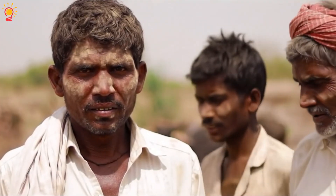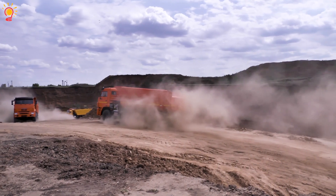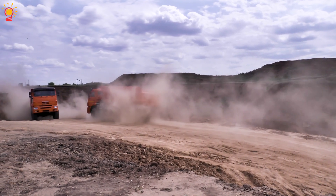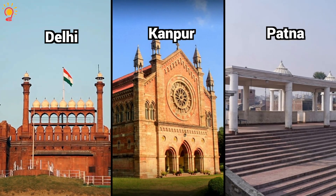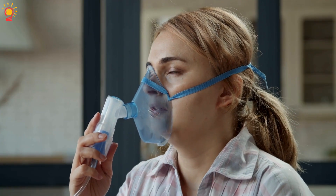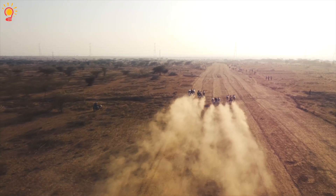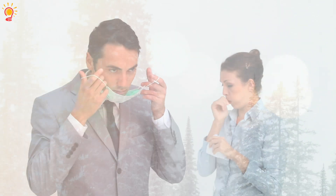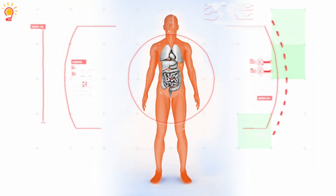How dust affects India — Air pollution and public health: Dust contributes significantly to air pollution, worsening conditions in cities like Delhi, Kanpur, and Patna. Increased respiratory diseases, especially among children and the elderly, result from prolonged exposure to dust particles. Fine dust — PM2.5 and PM10 — can enter the lungs and bloodstream, causing long-term health complications.